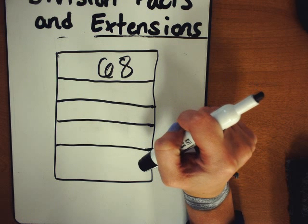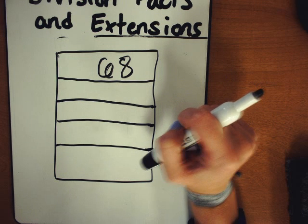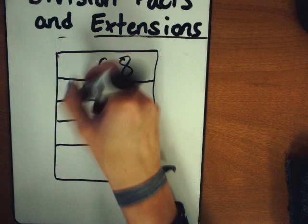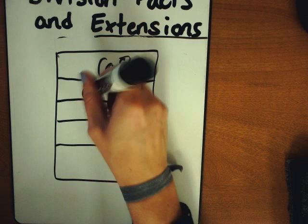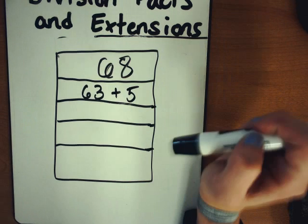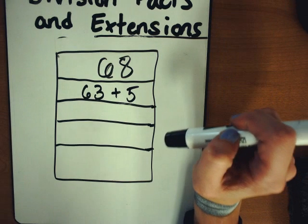But we're going to try and come up with numbers that are multiples of other numbers. So for example, 68, I can break up into more friendly numbers, 63 and 5. 63 is a multiple of 7 right there.